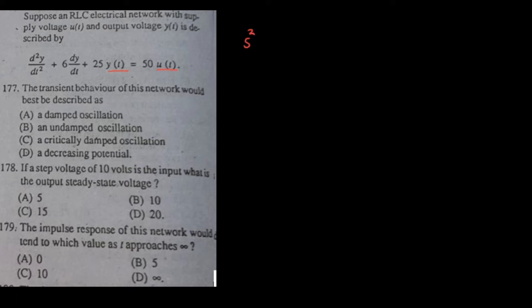In this question, we have a second order system with input u(t) and output y(t). Before answering, let's convert this ODE form into algebraic form by taking the Laplace transform. The system can be written as: s² y(s) + 6s y(s) + 25 y(s) = 50 u(s).